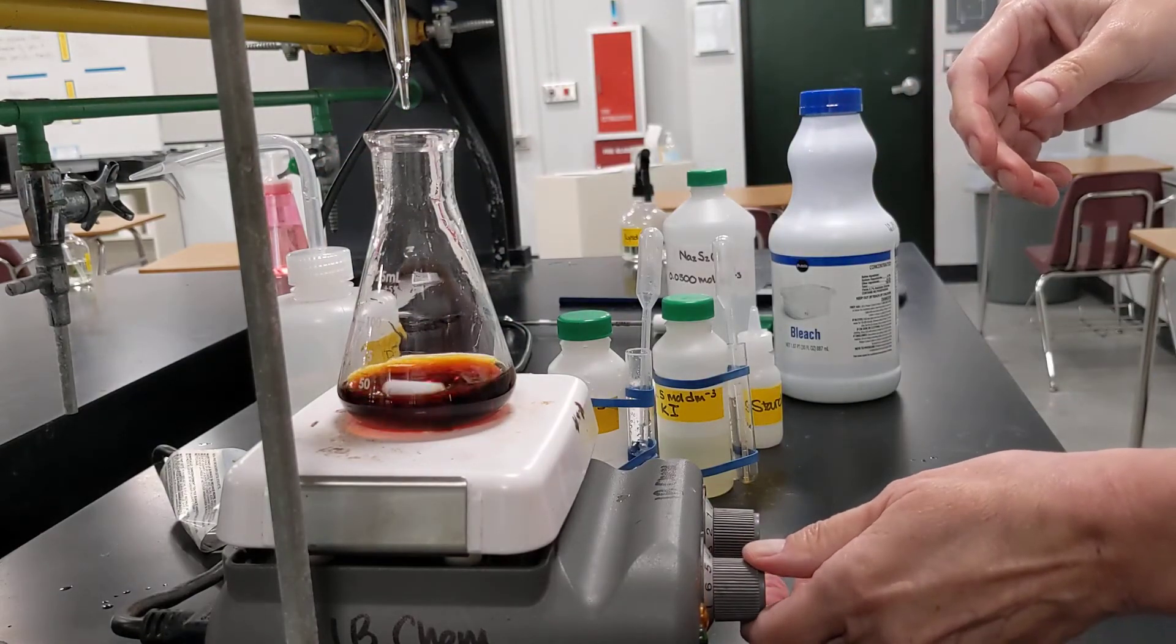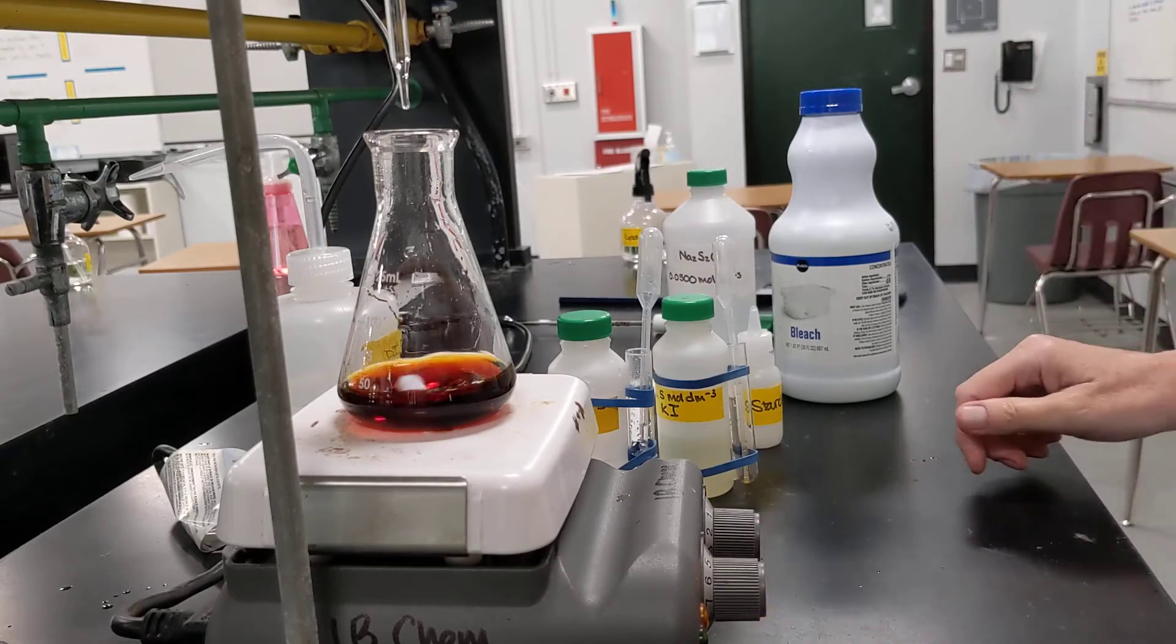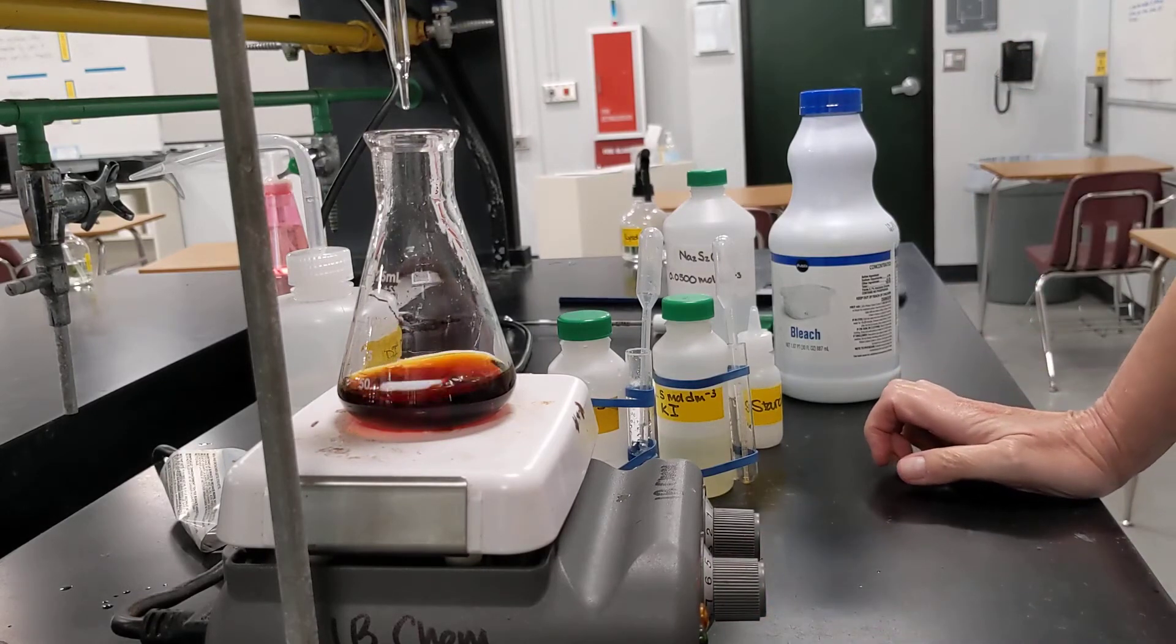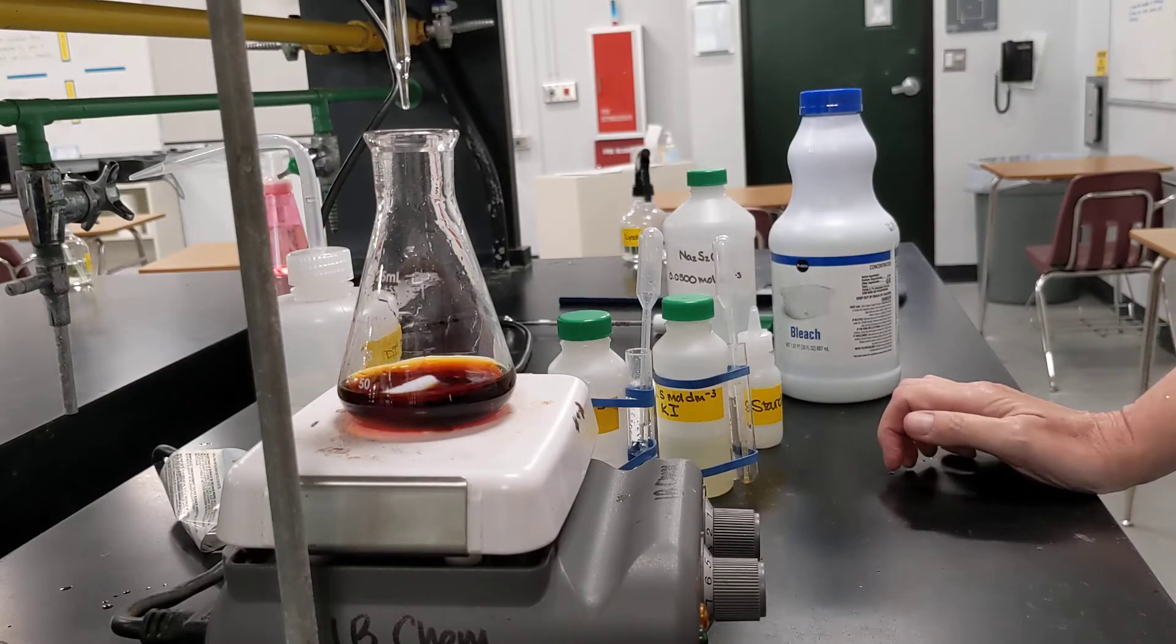All right. So I gave that a rinse. I'm going to turn on my stirrer. All right. And let's get an initial volume here. Initial volume is 11.91 cubic centimeters.